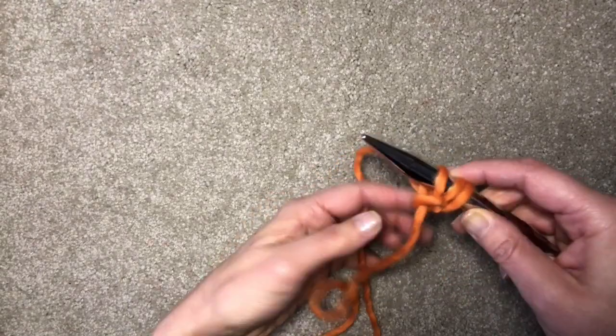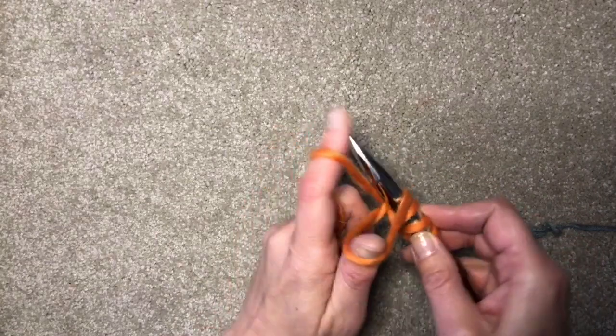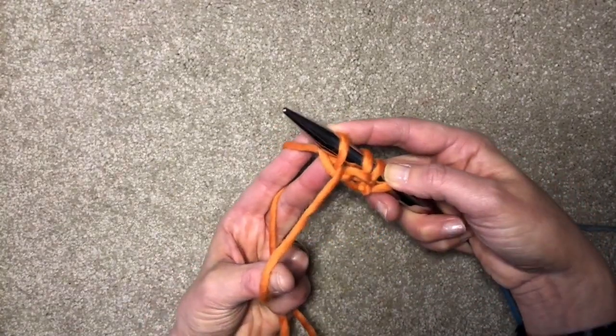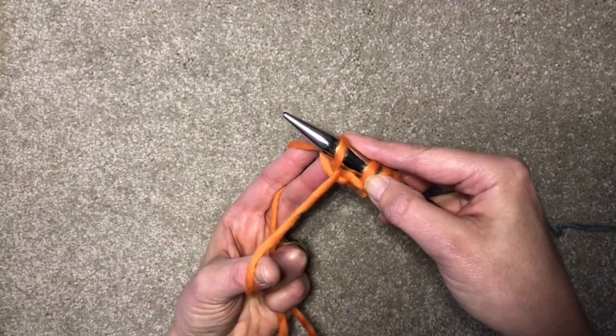That creates a purl stitch, and you can see here's my knit. There's a smooth stitch at the edge there, and beside it is a purl.